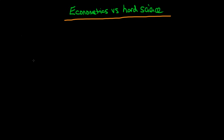In this video I want to talk about the difference between econometrics and hard science. By science I mean physics, chemistry, biology, and perhaps also by extension mathematics.